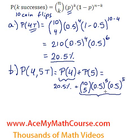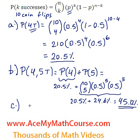This whole thing is going to work out to be 24.6%, you can check it out on your calculator. And by adding them, we're going to have 45.12% probability of getting exactly 4 or 5 tails.